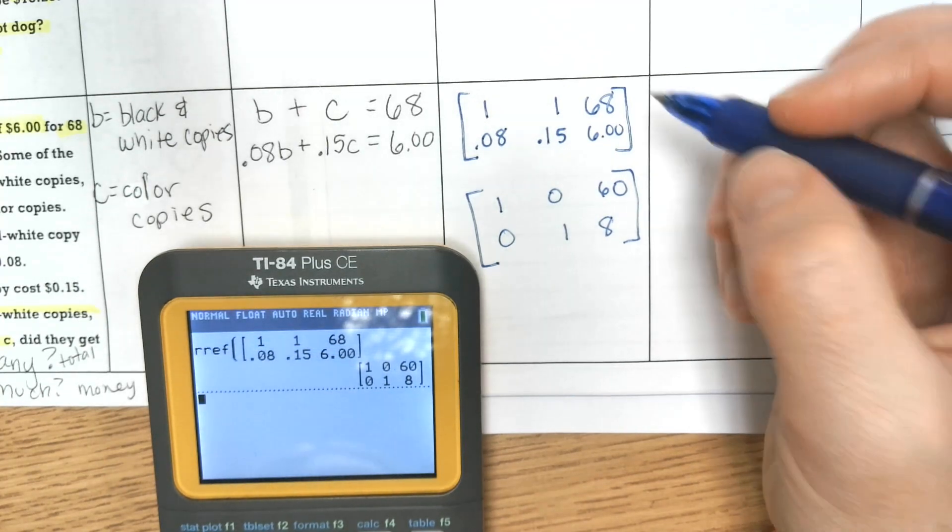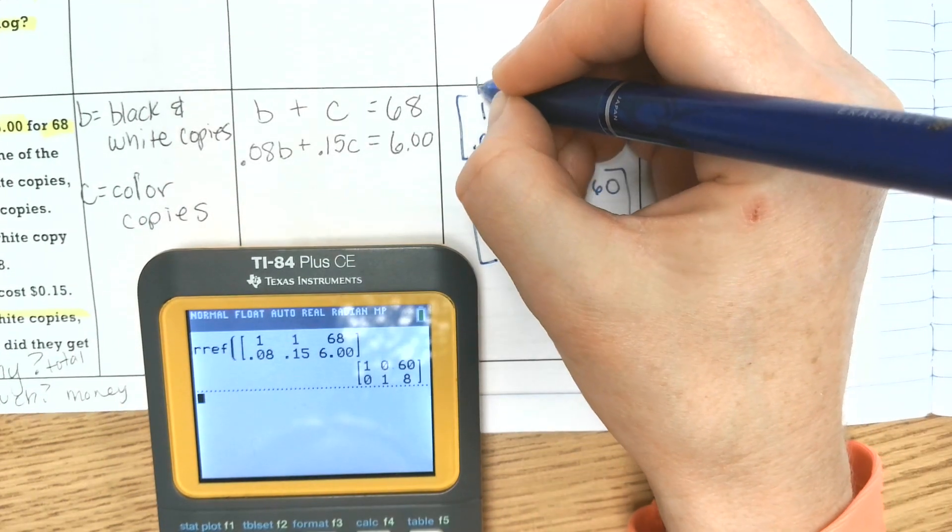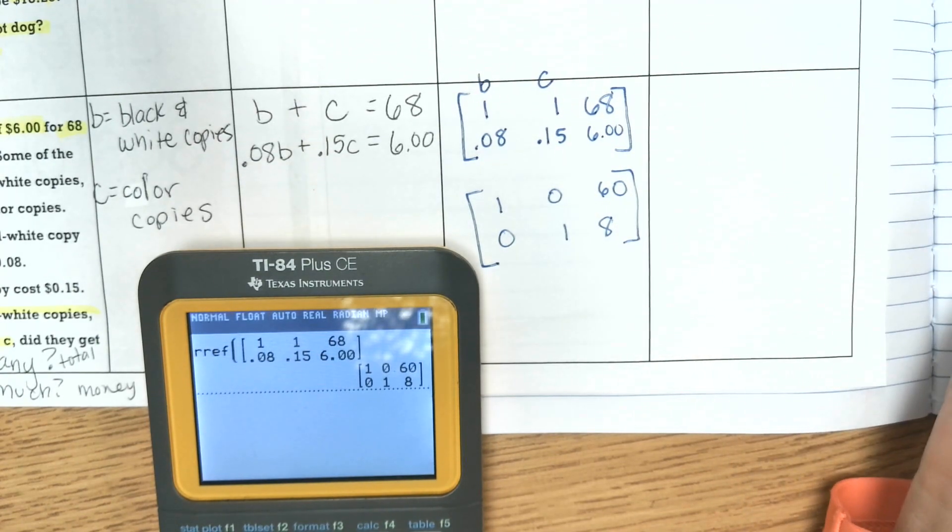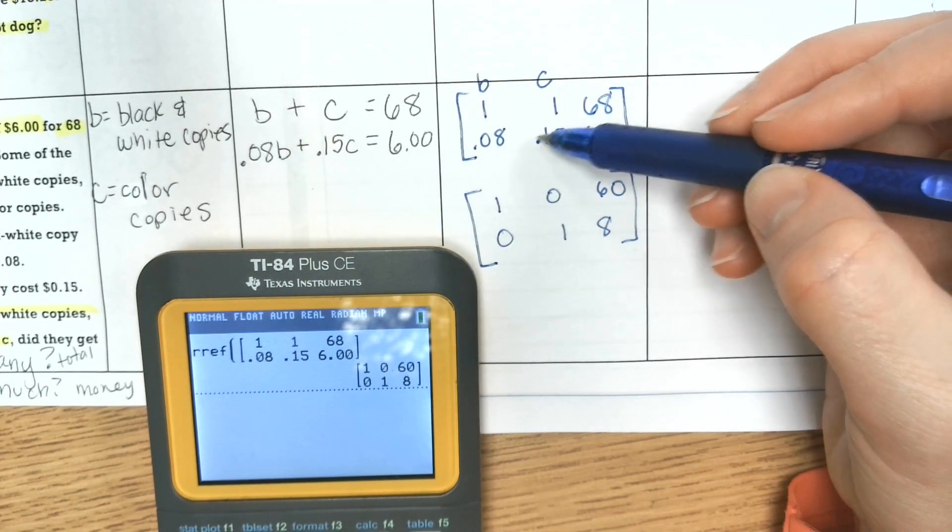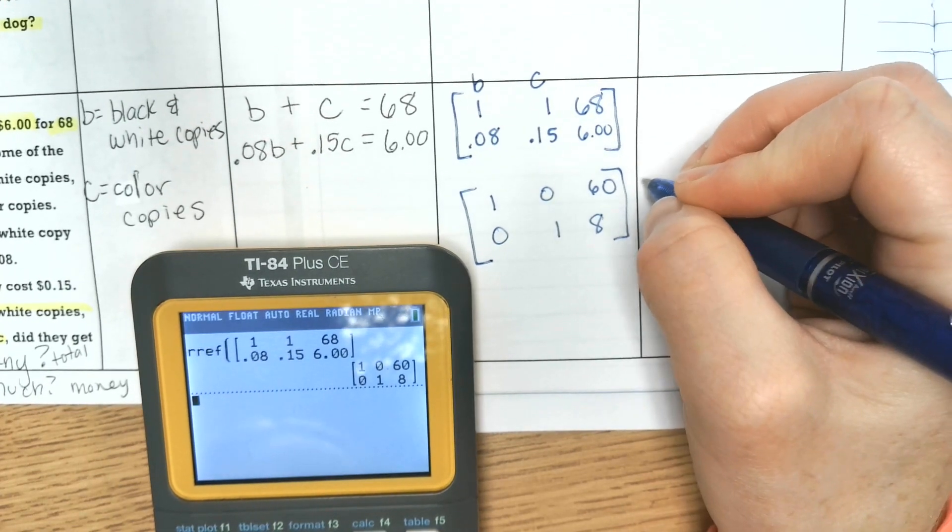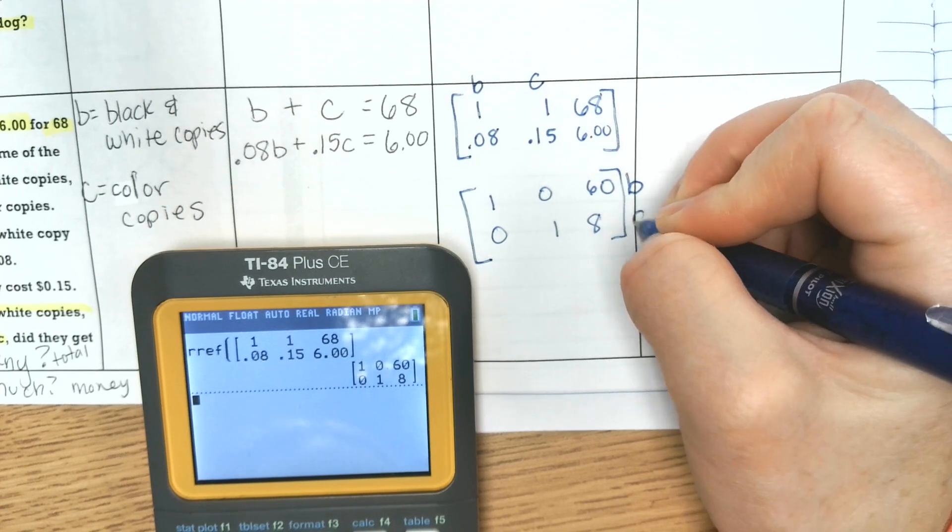So we need to figure out which one's which. So it was B, C, black and white copies, color copies. Color copies are a lot more expensive. They're almost double the price. And so going down the side is going to be B and C. Across the top was order B, C. The output matrix down the side is B, C.